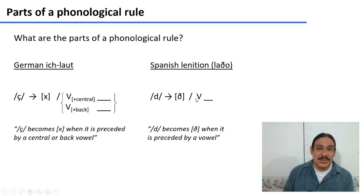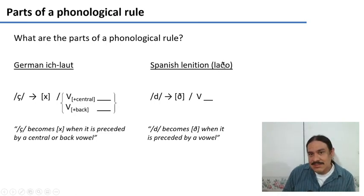So this rule says that whenever you have a d like this one, the one in lado, which means side, the d would transform, would become a ð because it is preceded by a vowel. And indeed, this ð here has a vowel before it. So this environment triggers the rule and transforms the d into a softer ð.